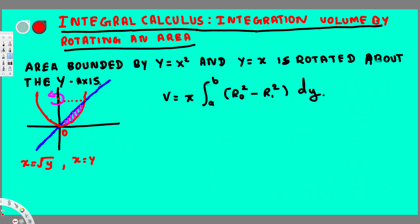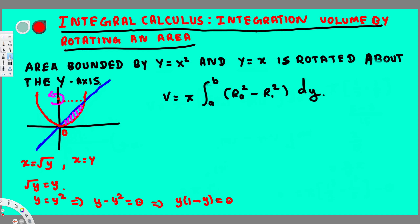Now we equate the two: √y = y. Squaring both sides gives y = y². Bringing both to one side: y − y² = 0. Factoring out y: y(1 − y) = 0. From this, y = 0 and y = 1. So we already knew zero, and the other limit is one.